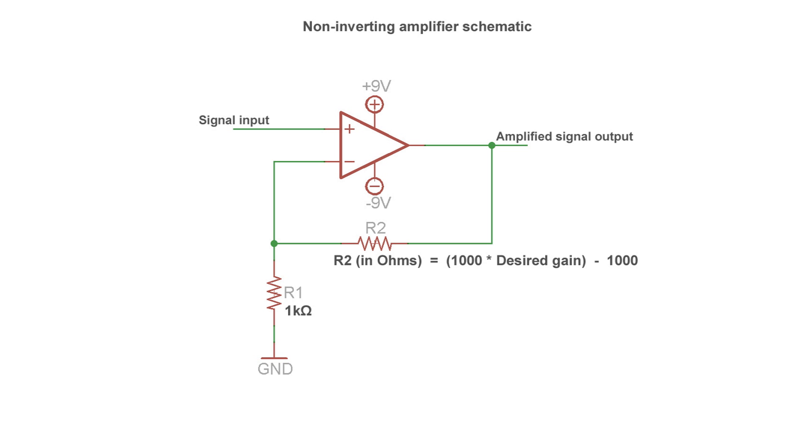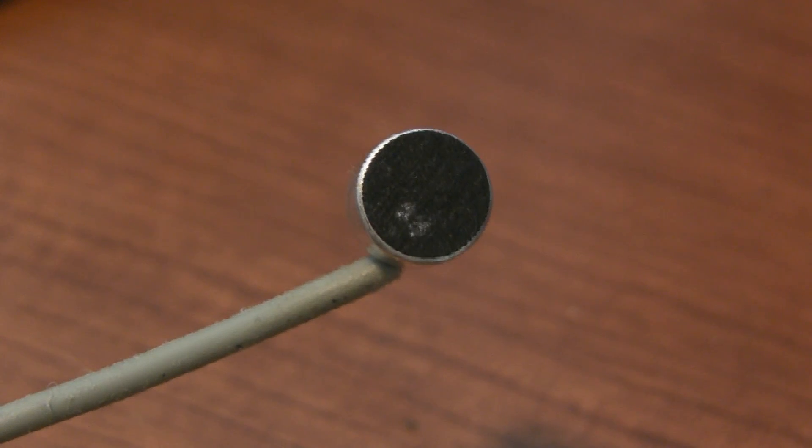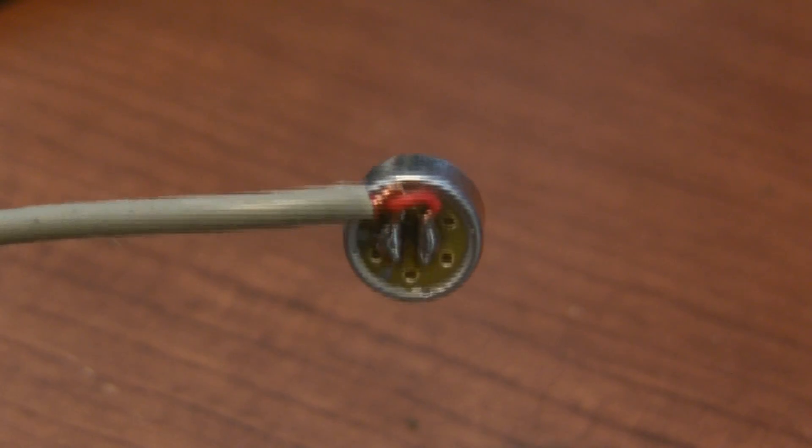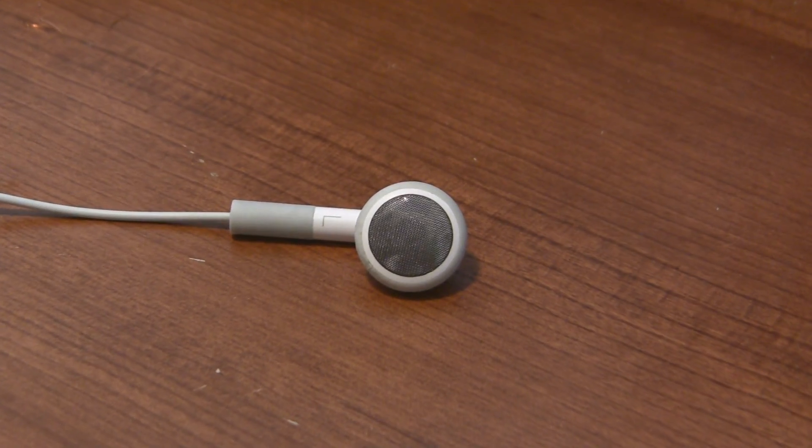Alright, I am getting sick of theory now, so let's actually build something. I want to build one of those spy listening circuits that picks up faint sounds on a microphone, amplifies them, and lets you hear them on some iPod earbuds.